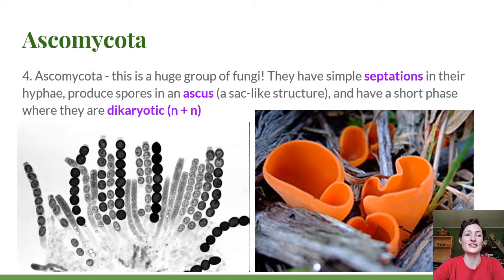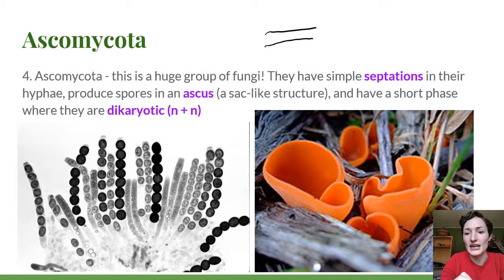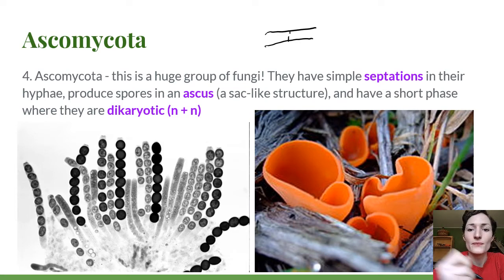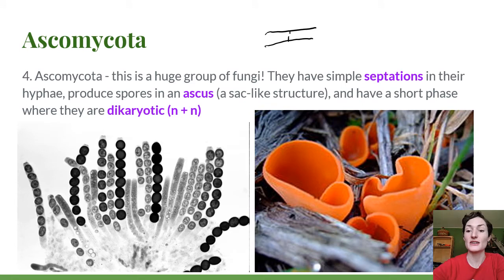Our first group is the Ascomycota — a huge group of fungi, and the most species we have described so far belong to this group. They have simple septations, meaning their hyphae are no longer coenocytic. Now we have septations with a little hole through the middle of the septum, so those strands are broken up into individual cells but there is still the ability for material to move through.